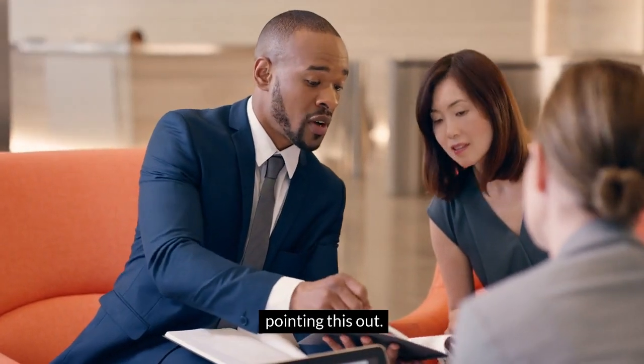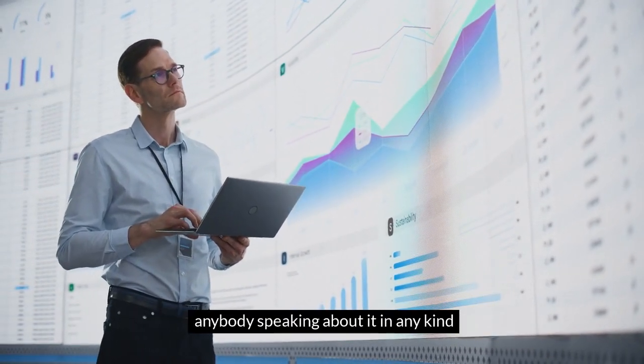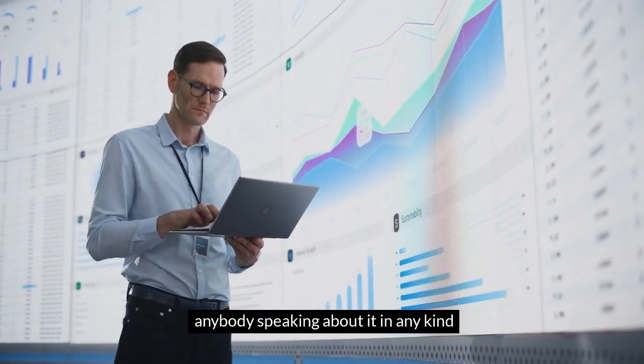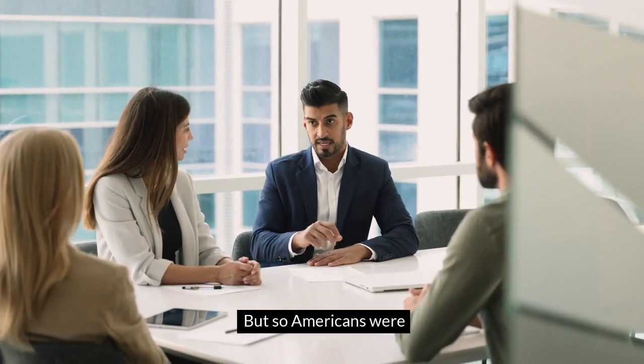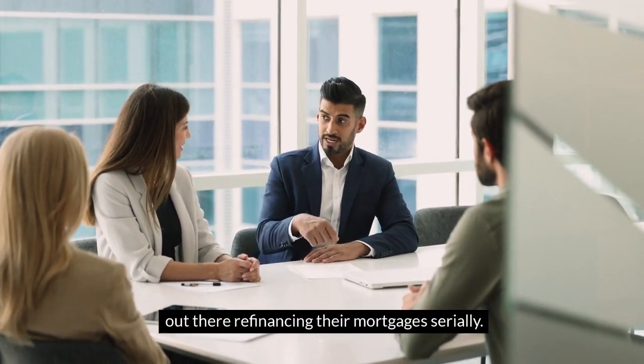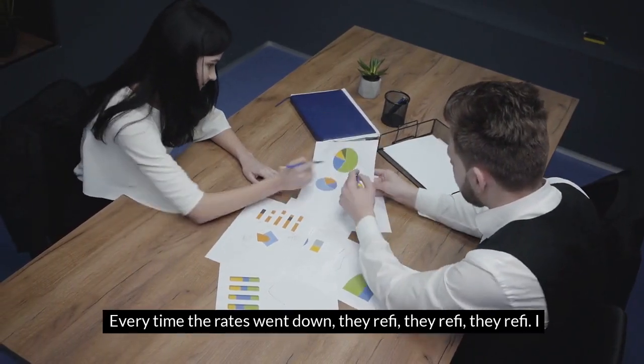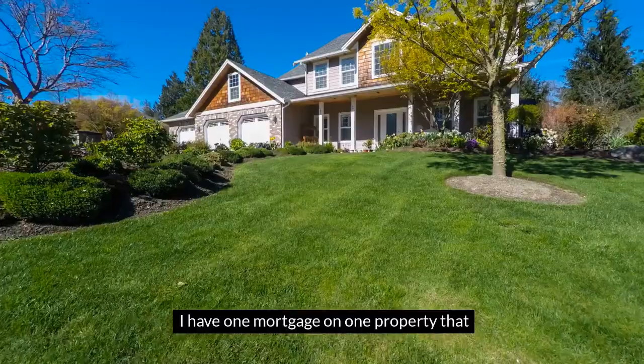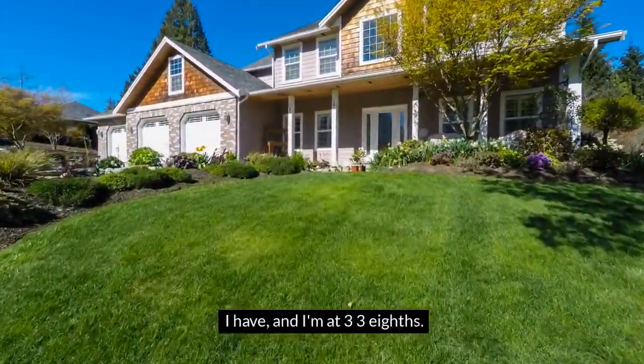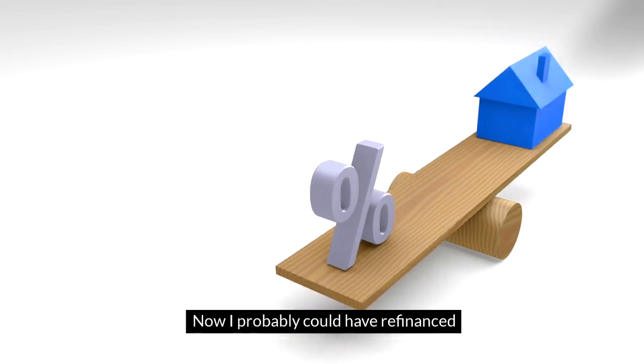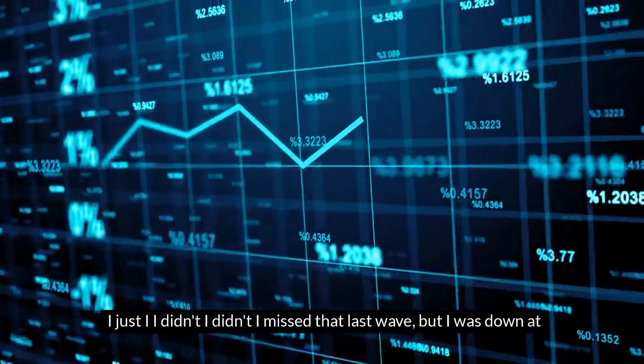To my knowledge, nobody else was pointing this out. I didn't hear anybody speaking about it in any kind of public way like I was. So Americans were out there refinancing their mortgages serially every time the rates went down—they refi, they refi, they refi. I did it myself. I have one mortgage on one property, and I'm at three and three-eighths now. I probably could have refinanced again and gotten even below three. I just didn't—I missed that last wave, but I was down at three and three-eighths.